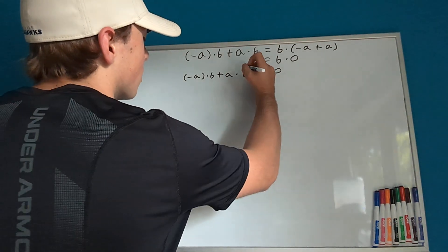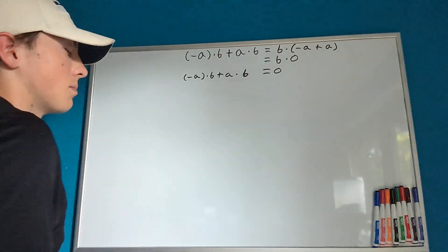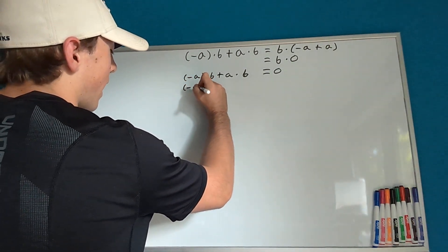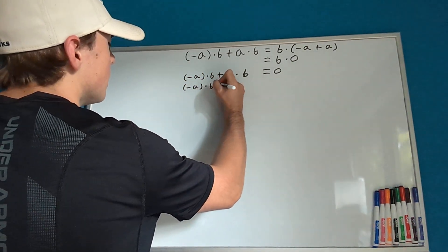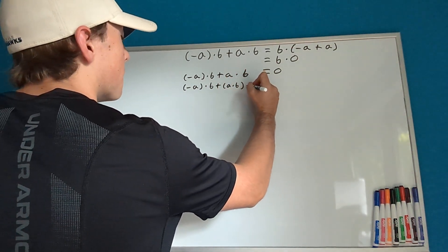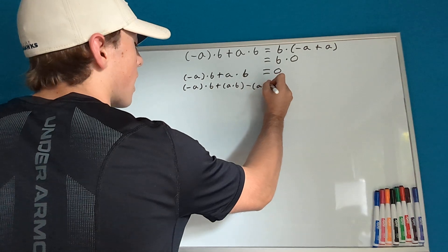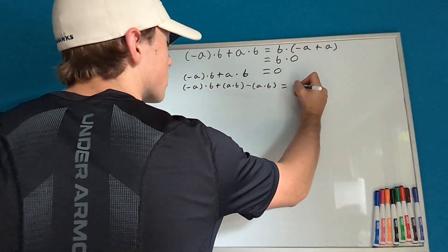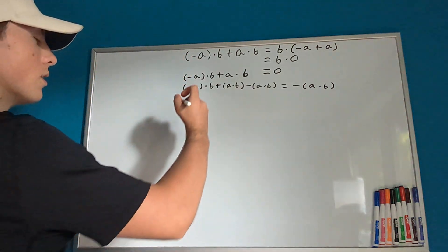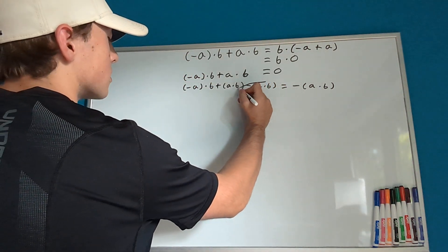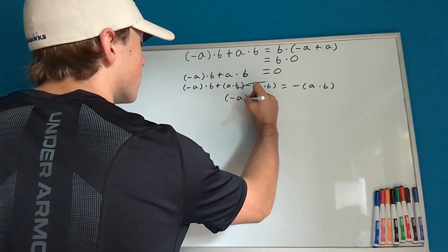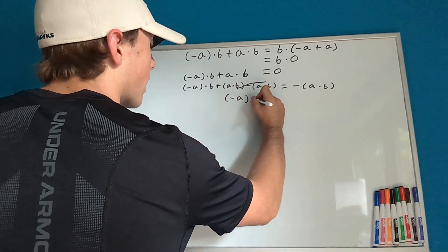The next thing we want to do is subtract a times b from each side. So we get negative a times b plus a times b minus a times b equals negative a times b. These two will cancel out and we'll just be left with negative a times b.